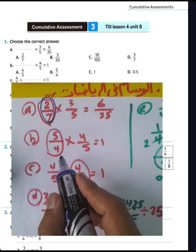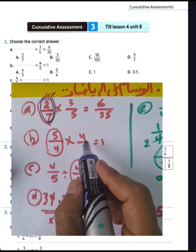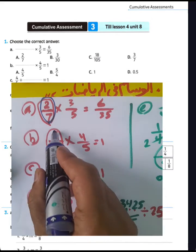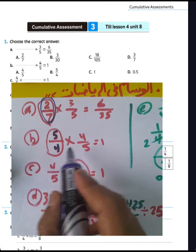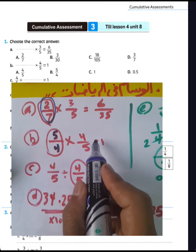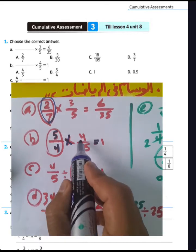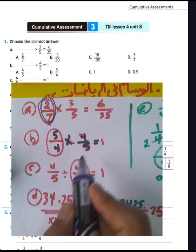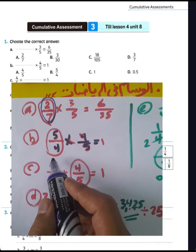Question letter B: 5 over 4 multiplied by its inverse. We must write 5 over 4 multiplied by its reciprocal — it will be 1. Any number multiplied by its reciprocal gives a result of 1. Then we can write 5 over 4.